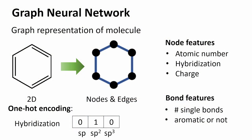We can represent a molecule as a graph where atoms correspond to the nodes of the graph and the bonds correspond to the edges. We talked about this in the molecular representation section. Each node can be represented as a node feature with atomic number, hybridization, charge, and so on. Bond features include whether bonds are single or aromatic.